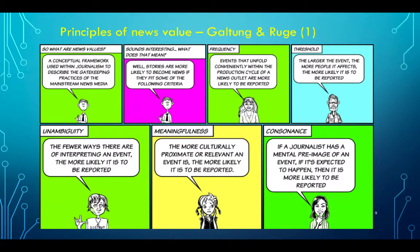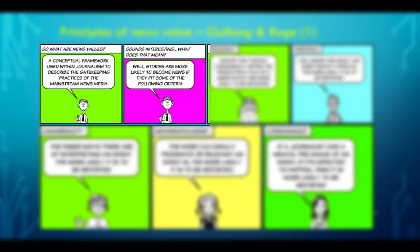Principles of News Value. According to Galtung and Ruge, there are principles of news value which news organizations, journalists and reporters stick to when producing the news. This is a conceptual framework used within journalism to describe the gatekeeping practices of the mainstream news media. Journalists do gatekeeping — they are filters to news. They do not publish or cover everything because they are selective, and this selection takes place according to criteria for news value.